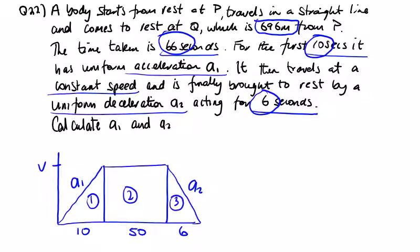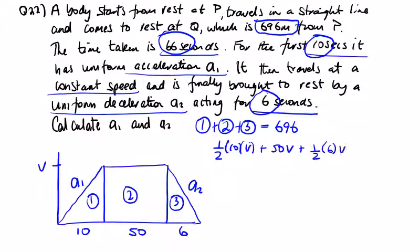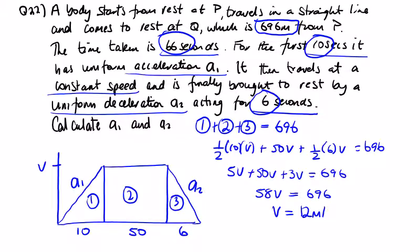So we can use the area under the curve of 696 to find out what V is. So we have one, two, three, these areas. One plus two plus three equals 696. So half of 10 by V plus 50 by V plus half of 6 by V equals 696. So I'm going to get 5V plus 50V plus 3V equals 696. So 58V equals 696, which gives V equals 12 meters per second.